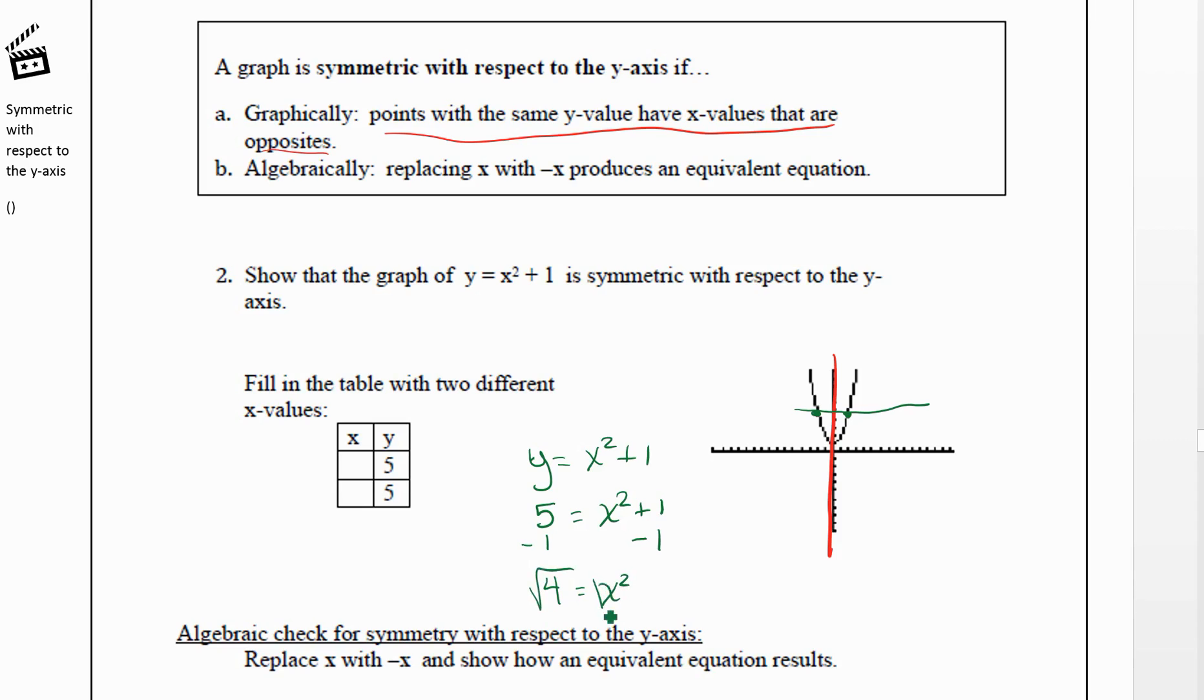And when we take the square root of both sides, we get plus or minus. So we're going to get x equals plus or minus the square root of four, which is two. So two and negative two.